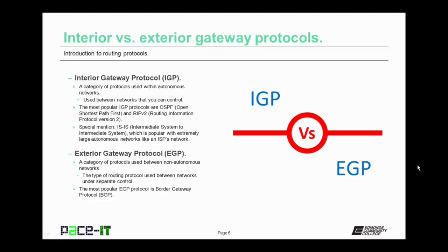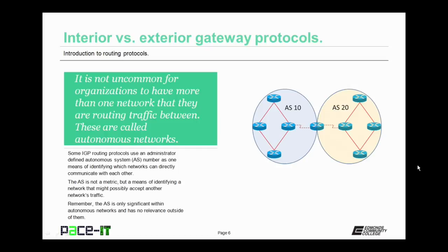Exterior gateway protocols, on the other hand, are a category of protocols used between non-autonomous networks. EGPs are used between networks that are controlled by different organizations or entities. The most popular EGP protocol is Border Gateway Protocol. It's not uncommon for organizations to have more than one network that they are routing traffic between — these are called autonomous networks. Some IGP routing protocols use an administrator-defined autonomous system number, or AS number, as one means of identifying which networks can directly communicate with each other. The AS number is not a metric but a means of identifying a network that might possibly accept another network's traffic. The AS is only significant within autonomous networks and has no relevance outside of them.